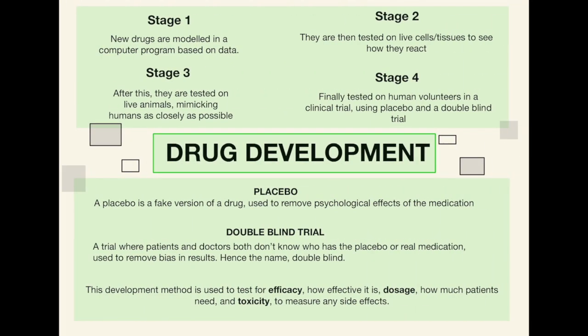Finally we have drug development, which involves the idea of a new medicine coming to the general public. There are four stages. Stage one: new drugs are modelled in a computer program based on data — effectively a model world is created to see what would happen if that drug were introduced. Stage two: they are tested on live cells or tissues to see how they react with organelles like mitochondria. Stage three: they are tested on live animals mimicking humans as closely as possible. Stage four: they are tested on human volunteers in a clinical trial using a placebo and a double blind trial.